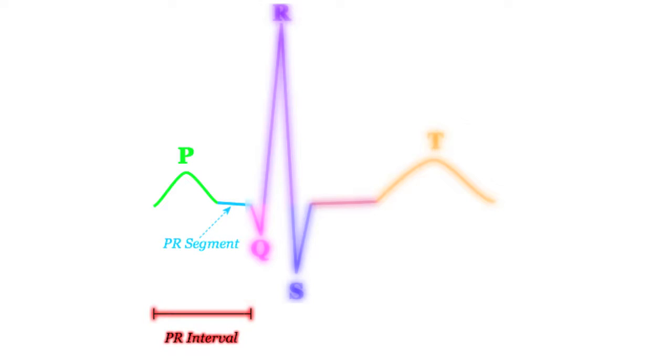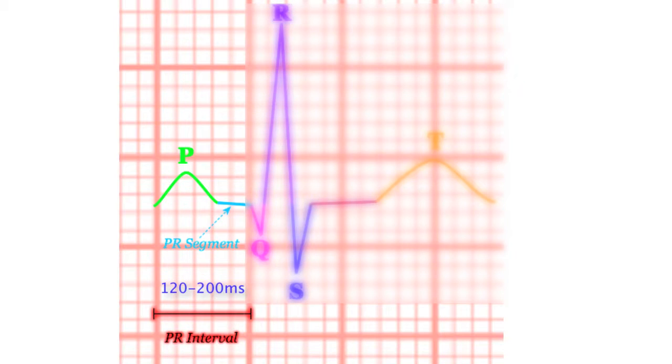The PR interval then follows. It starts at the onset of the P wave and ends at the onset of the QRS complex. It is normal between 120 to 200 milliseconds, or three to five boxes.